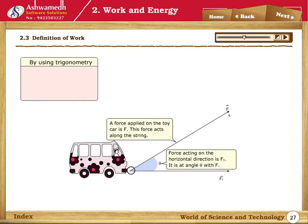By using the knowledge of trigonometry, we can write cos theta is equal to OB upon OA. OB is equal to OA cos theta. F1 is equal to F cos theta. This is a component of applied force F along the horizontal.